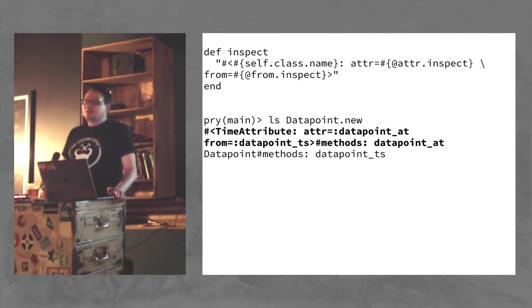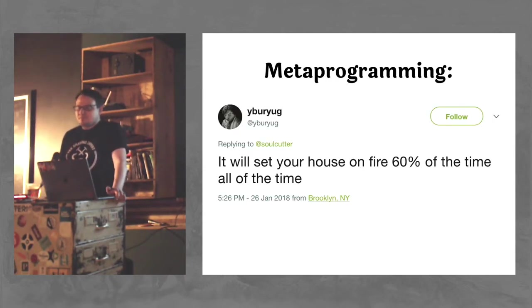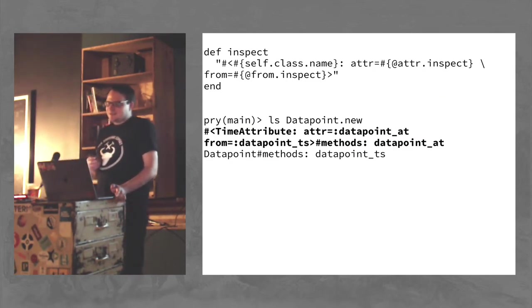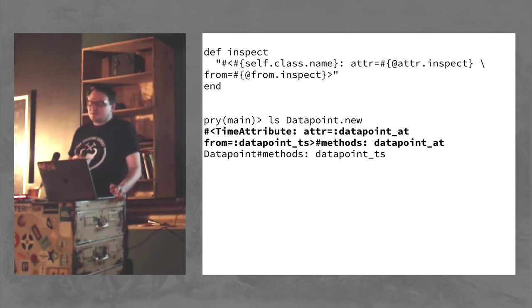So now when you look at the ancestry or the ancestors of data point, you'll see that instead of this weird anonymous module, now you have a TimeAttribute module. So that's kind of cool. That's definitely going in the right direction. It's hinting at what this thing is that's defining. You can look up TimeAttribute in your code and find it way easier than you can look up an anonymous module. But I did notice that there's still that weird memory address.